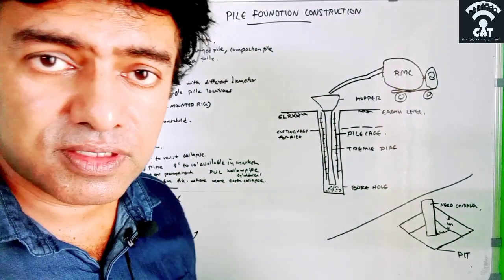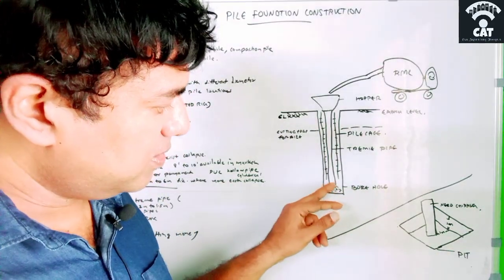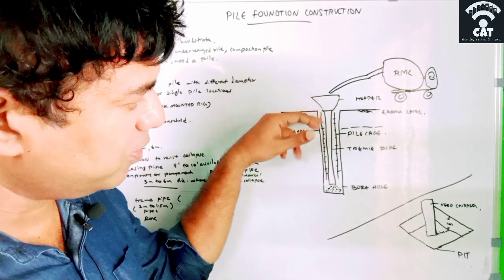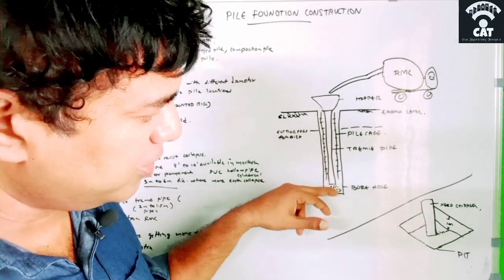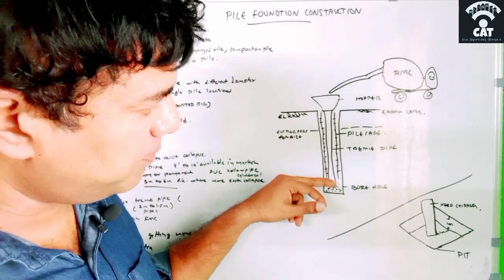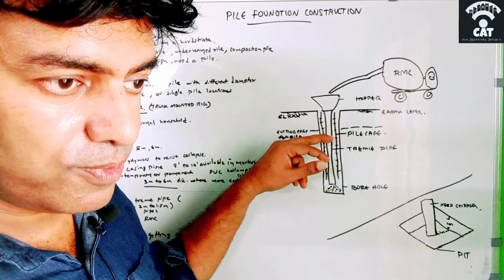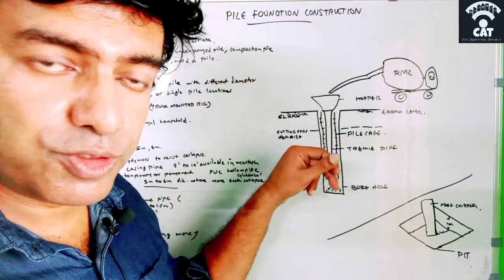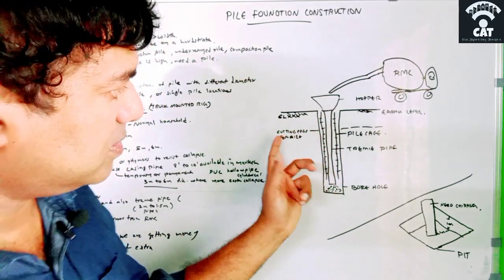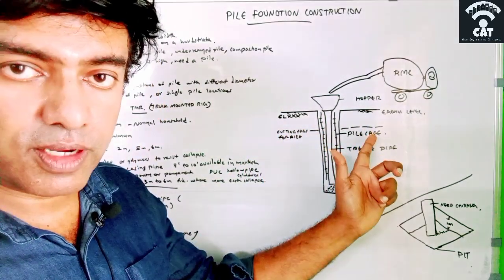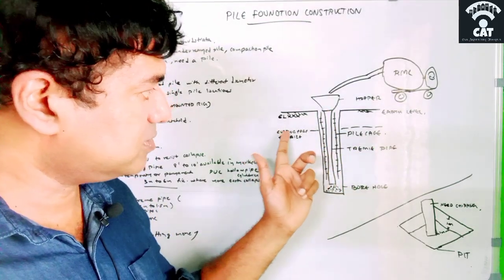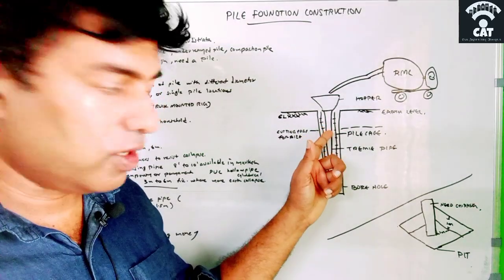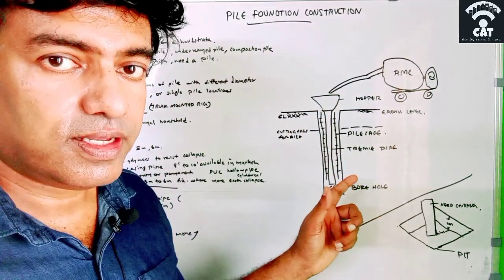When concrete reaches the bottom, the bore hole is filled with bentonite mixture and groundwater. As concrete is added, the bentonite mixture rises upward. As concrete level rises, the tremie pipe is also raised — we remove the first tremie pipe section when concrete has filled to that level, then the next, and so on. There is a cutting edge for every pile up to which the pile is needed; beyond that we do not need the pile.